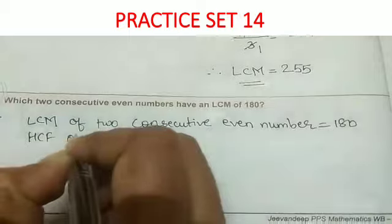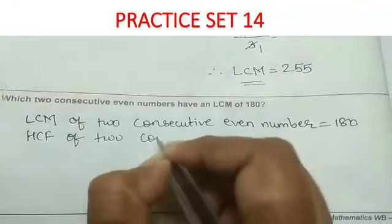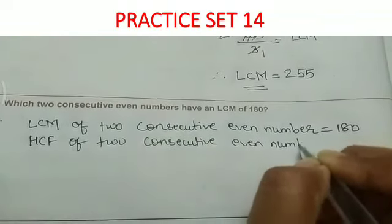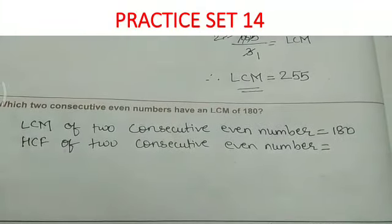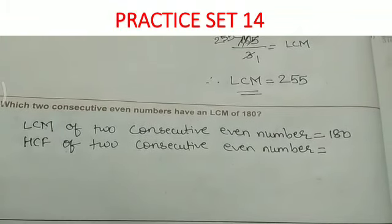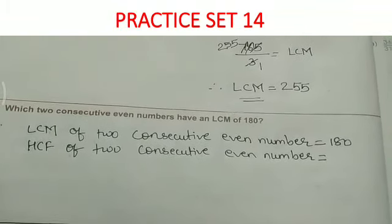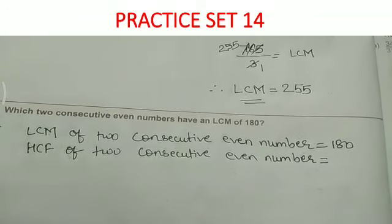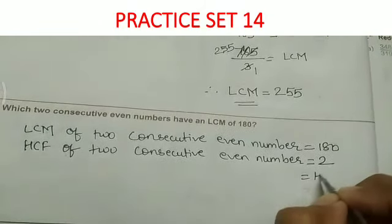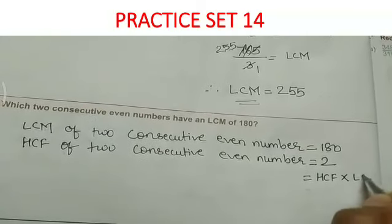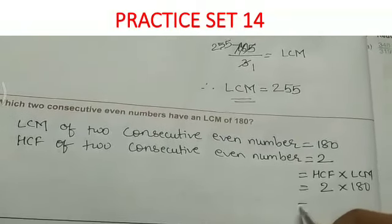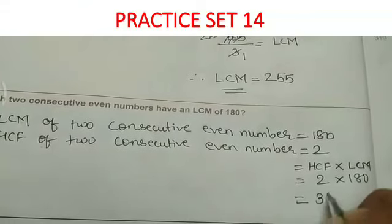Now we have to find out the HCF of 2 consecutive even numbers. Keep in mind that the HCF of 2 consecutive even numbers is always 2. Now we find the product of HCF and LCM: HCF is 2, LCM is 180, so the product is 360.